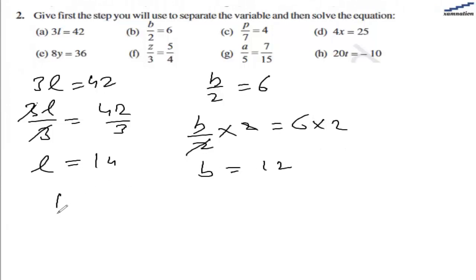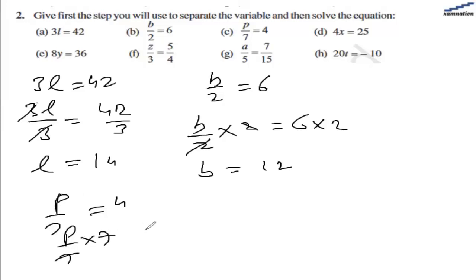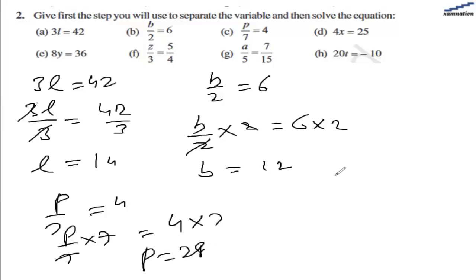For part c, similarly, we multiply both sides by 7. When we multiply 7 on the left hand side, the 7s cancel out. And when we multiply 4 by 7 we have 28. So P equal to 28 is the answer for part c.